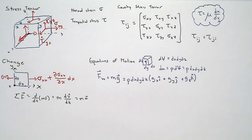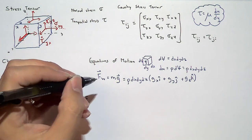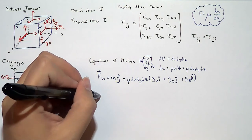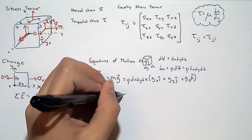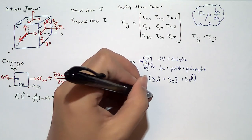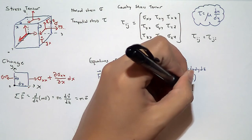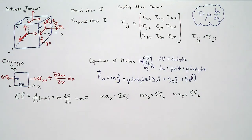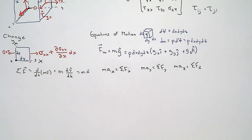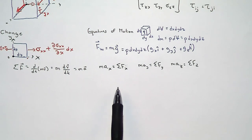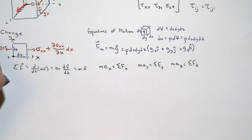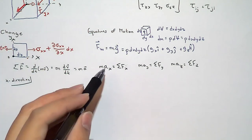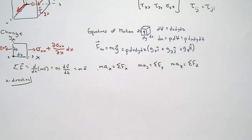Since this law deals with vectors, we can break it down into three components. In the x direction: mass times acceleration in x equals sum of forces in x. Similarly for y and z. Let's start by writing Newton's second law in the x direction: mass times acceleration in the x direction equals the sum of forces on the fluid particle.